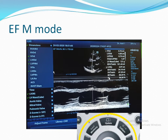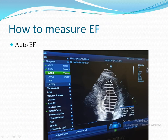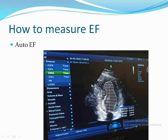To measure Ejection Fraction using auto mode, your ECG cable should be connected and you must have saved a clip while the ECG cable was connected. After that, simply press the Auto Ejection Fraction button and the machine will automatically measure the ejection fraction.